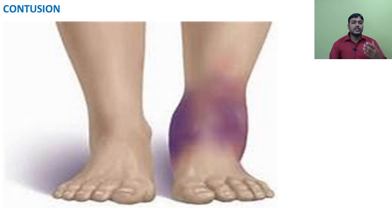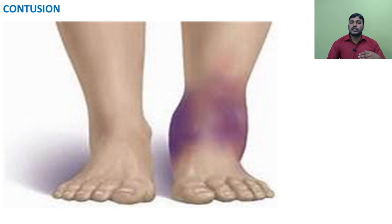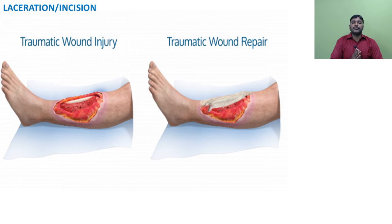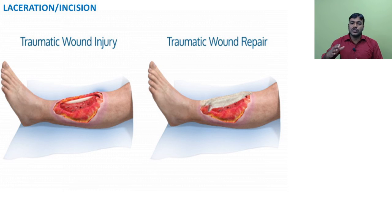Contusion is a superficial injury in which the skin is not broken but often produces a bruise. There may be faint swelling and discoloration of the skin. Generally, contusion is caused by hitting a blunt object. Laceration or incision: it is a tear in any tissue of the body; it may be external or internal. A lacerated wound is often caused by a cut from a sharp object such as a knife. When a ball hits skin over a sharp bone it may also create a laceration wound.